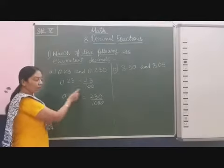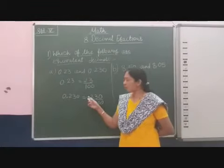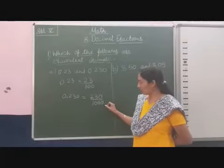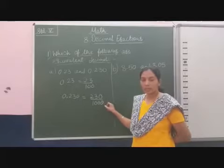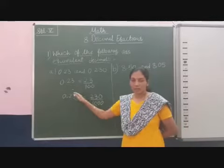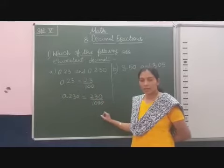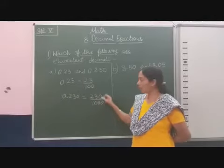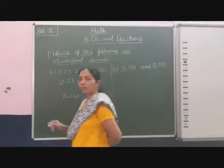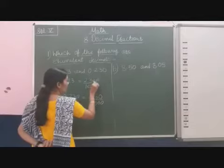I want to make like fractions. What I will do here is multiply by 10. Here I want to make the two fractions like fractions. First, these decimal numbers we convert into fractions. Here you can see 100 on one side and 1000 on the other. So I want to make the 100 into 1000. I will multiply by 10 for both numerator and denominator — multiply 10 on both sides.